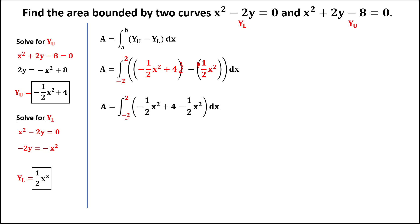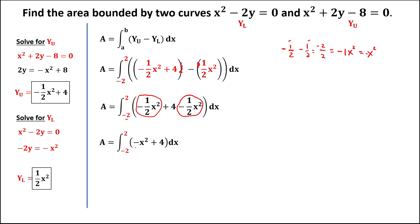We can combine the two x squared terms: negative one-half minus negative one-half — same denominator, add numerators: negative 1 and negative 1 gives negative 2 over 2, which equals negative x squared. So the integrand simplifies to negative x squared plus 4.